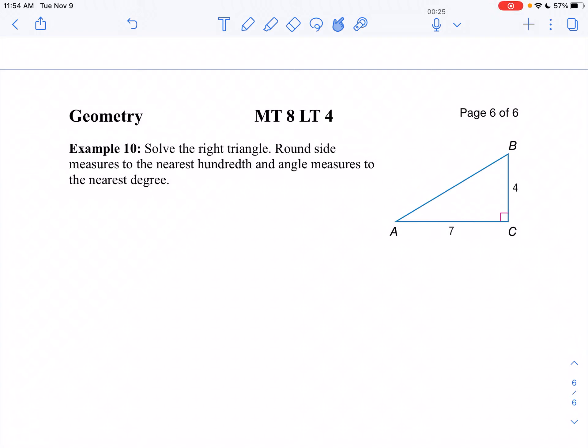On example 10, our directions say we want to solve the right triangle. I want to round the side lengths to the nearest hundredth and the angle measures to the nearest degree.